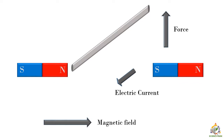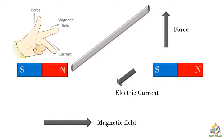These directions are easy to remember using a popular rule called the left-hand rule. Our thumb represents the direction of force, the four fingers represent the direction of magnetic field, and the middle finger represents the direction of electric current — and all three are perpendicular to each other.